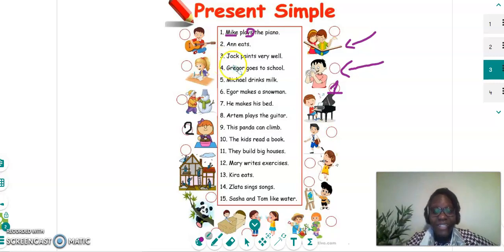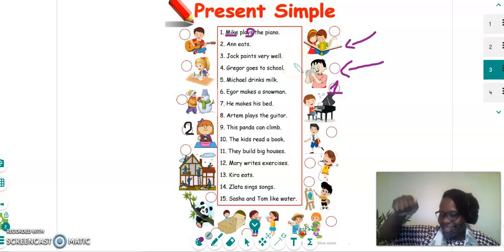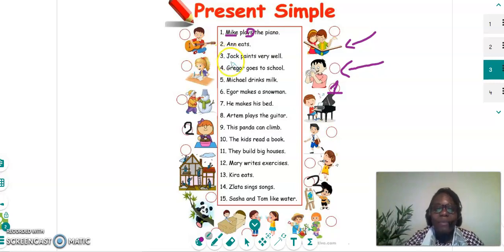What about number three? Good reading. Yeah. Jack paints. Very well. Where can you see Jack? If you can't see Jack. Yeah. Good. Fantastic. Yeah. So, here, because Jack is he, we use an S. What about the next one? Yes. Once you've spotted, write the number in the circle. Good. Good. Good.